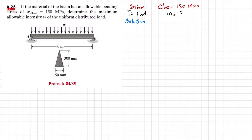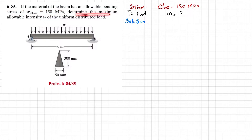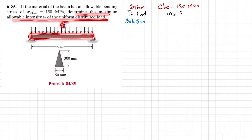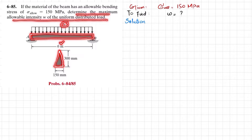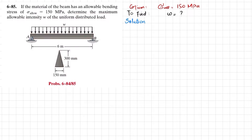Welcome back. Problem 6-85: if the material of a beam has an allowable bending stress of 150 megapascals, determine the maximum allowable intensity w of a uniformly distributed load. This is a simply supported beam acted upon by a uniformly distributed load. The length of the beam is 6 meters, the cross-section is triangular with height 300 mm and width 150 mm, and the allowable bending stress is 150 megapascals.